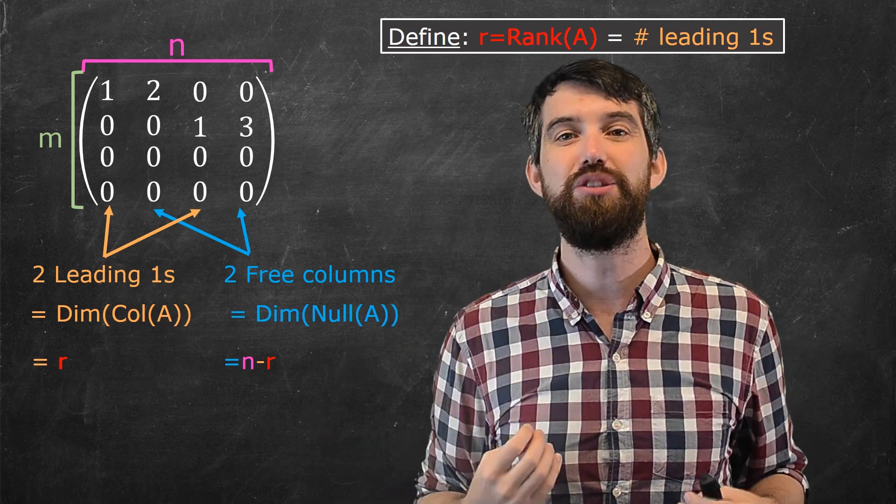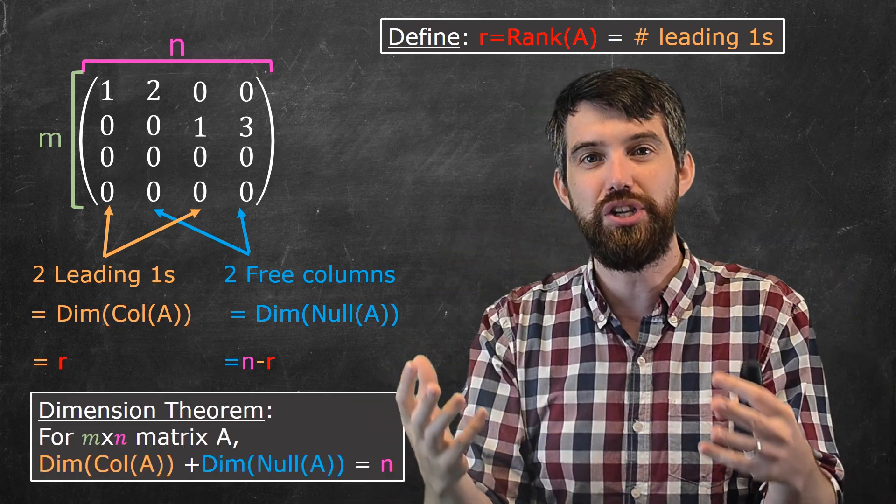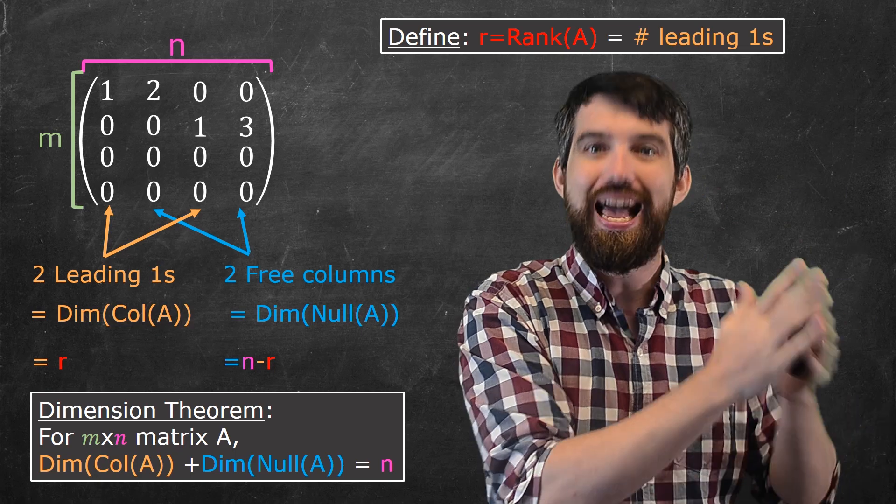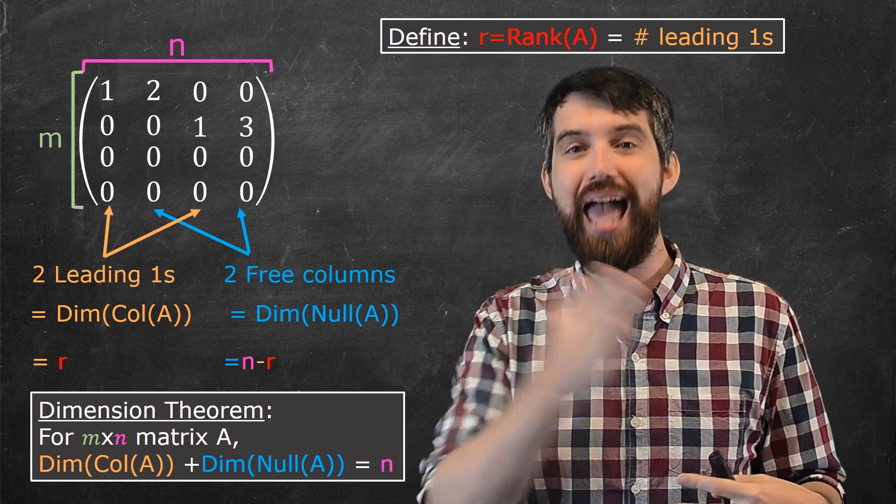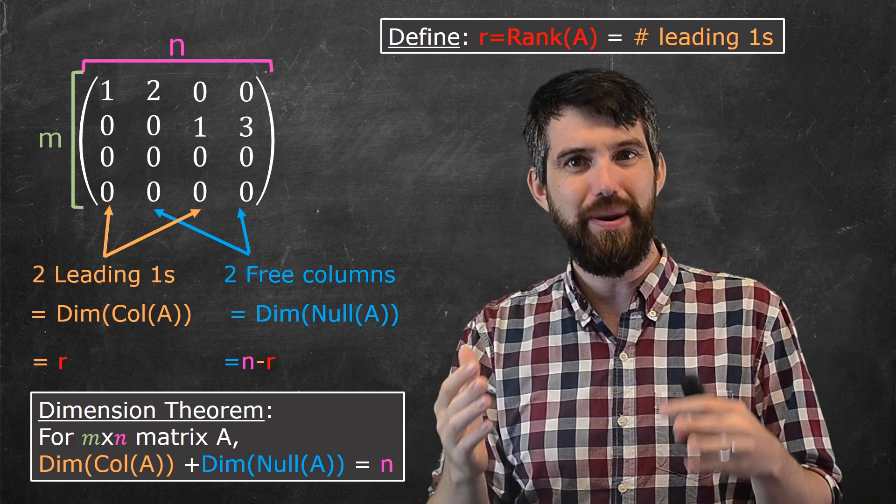So this tells me the dimension theorem, and it is the following. It says that the dimension of the column space added to the dimension of the null space has to add up to equal to n, as in the number of columns in an m by n matrix. Well, this is kind of interesting. It might seem surprising.